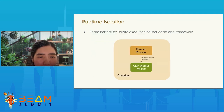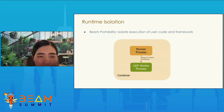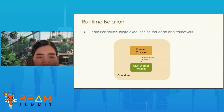Last but not least, we leveraged the Beam portability framework to achieve runtime isolation by separating the execution of user code and framework code. In an application container, a runner process handles the framework-level workloads including runner, driver, translator, and gRPC server, with UDF workloads dispatched to the UDF worker process. Runtime isolation allows us to achieve performance and fault isolation between user code and framework, meaning we can scale UDFs independently and troubleshoot UDF issues and framework issues with separate logs and metrics.